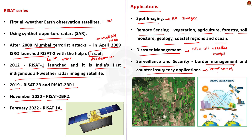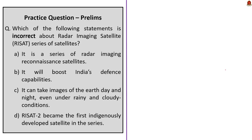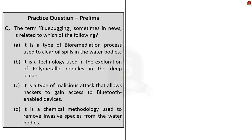From the above discussion, the correct answer for this question is option D. RISAT-2 is not the first indigenously developed satellite in this series — it was developed with the help of Israel.